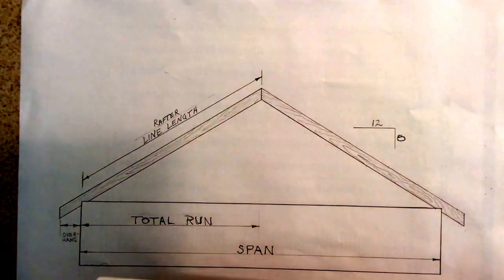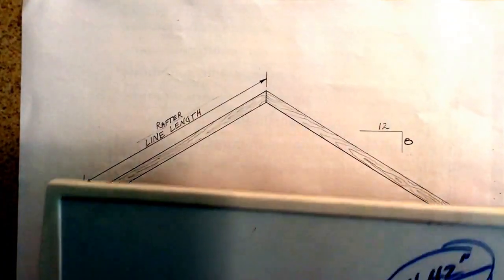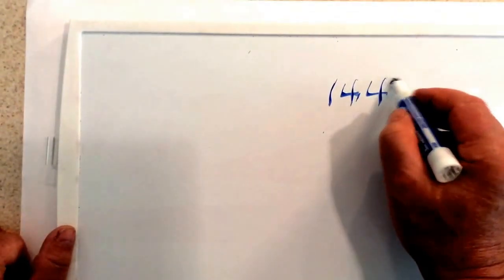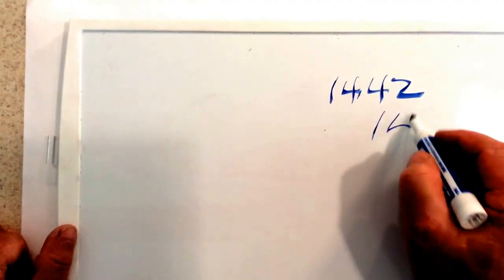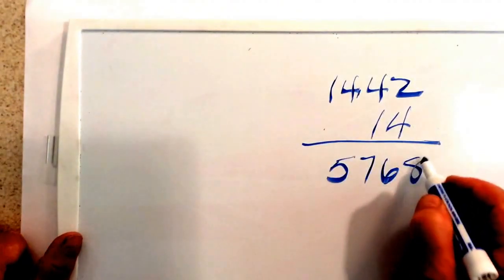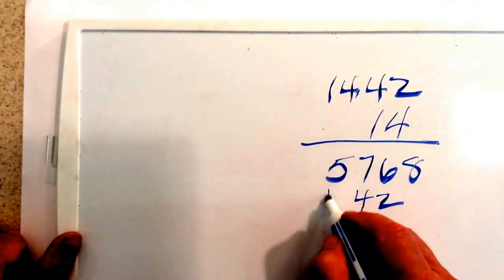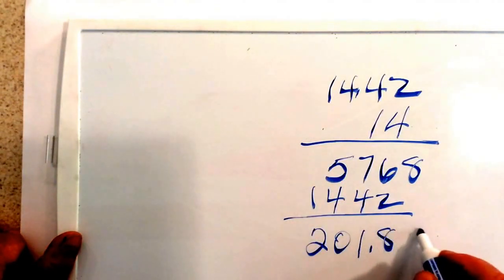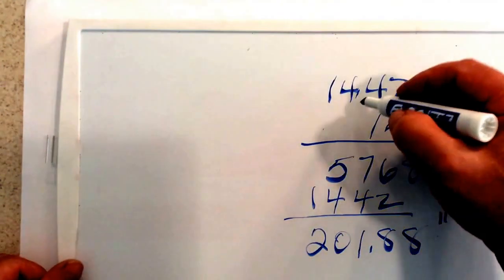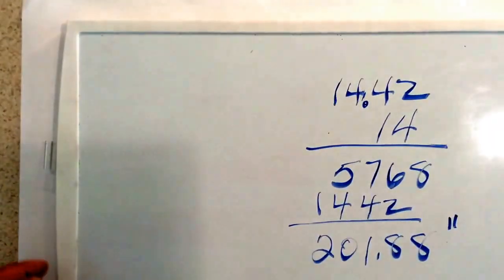We're going to use the number from the framing square in our example. If our span is 28 feet, our total run would be 14 feet. So we're going to multiply 14.42 times 14, which is half of our span. When we multiply this out, we get 201.88 inches. Our answer when we multiply is always going to be in inches.